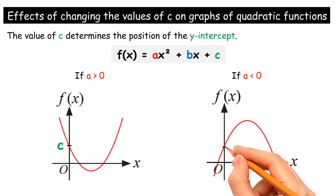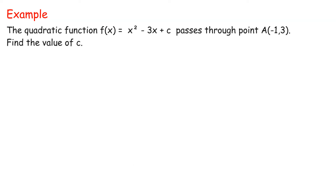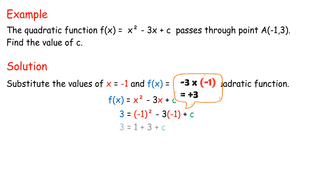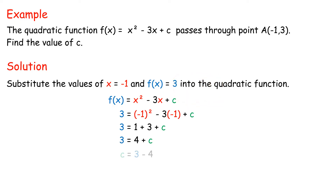The effects of changing the values of C on graphs of quadratic functions: the value of C determines the position of the Y-intercept. Example: the quadratic function f(x) equals x² minus 3x plus C passes through point A, negative 1, 3. Find the value of C. Solution: substitute x equals negative 1 and f(x) equals 3 into the quadratic function. 3 equals negative 1 squared minus 3 times negative 1 plus C. 3 equals 1 plus 3 plus C. C equals 3 minus 4. C equals negative 1.